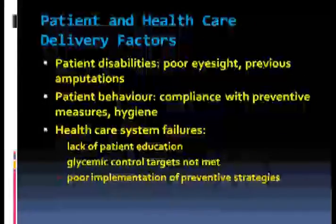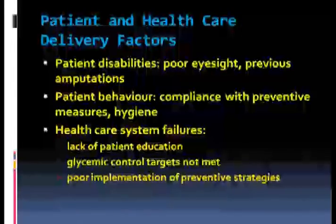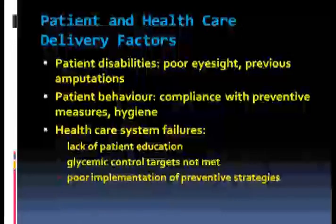What are patient and healthcare delivery factors? Patient disabilities such as poor eyesight and previous amputations also contribute to development of diabetic foot infections. Patients often don't comply with preventive measures and hygiene is poor. Apart from that, our healthcare system is also to some extent responsible because there is lack of patient education, glycemic control targets are most of the time not met, and there is poor implementation of preventive strategies.